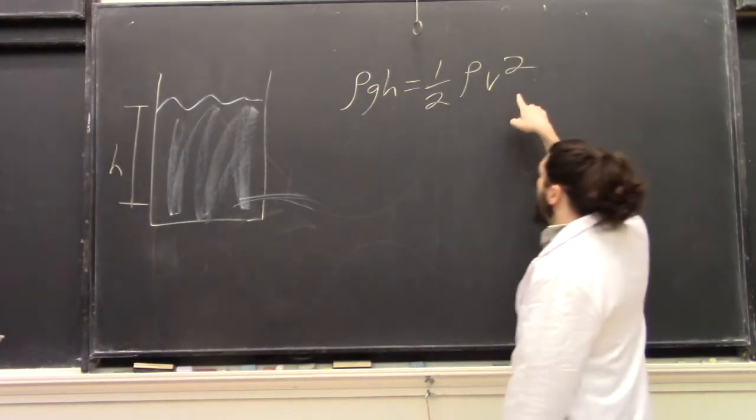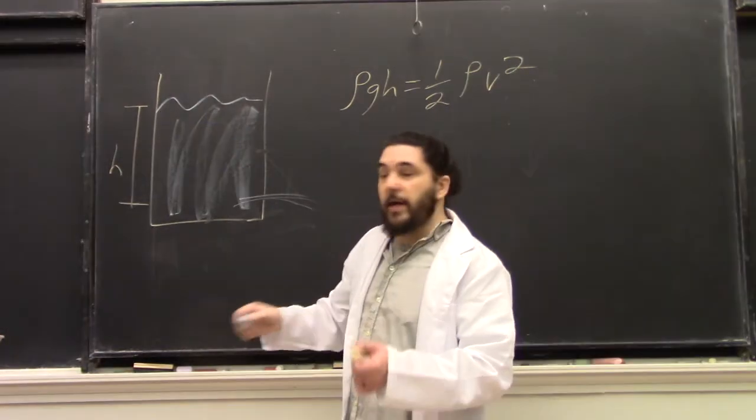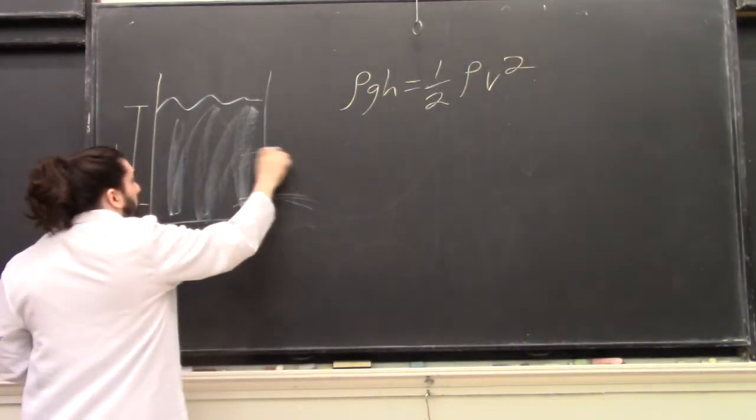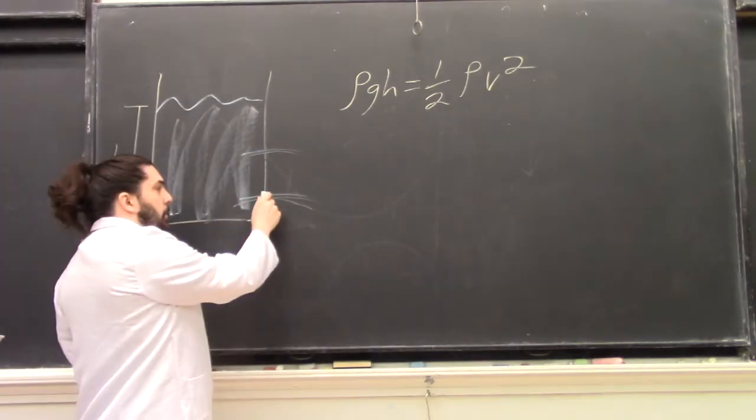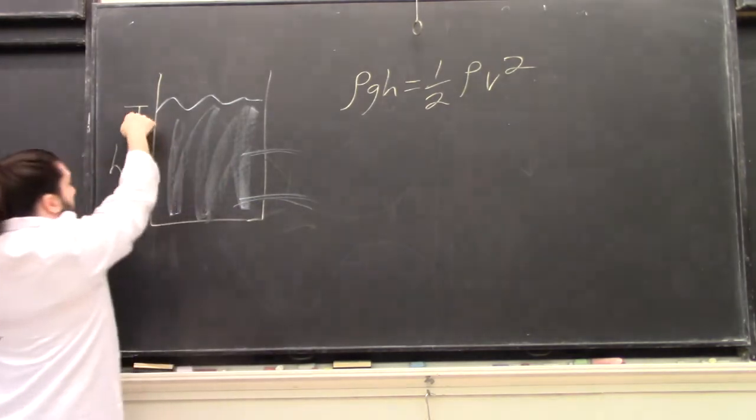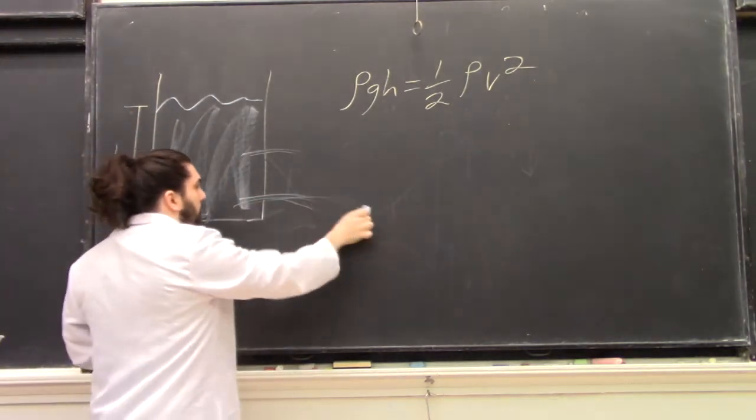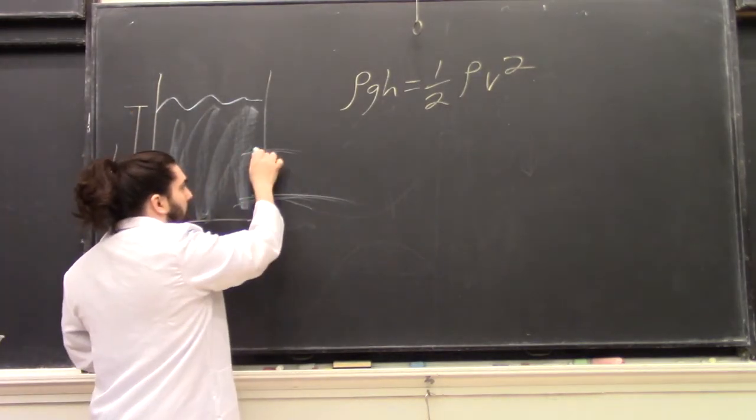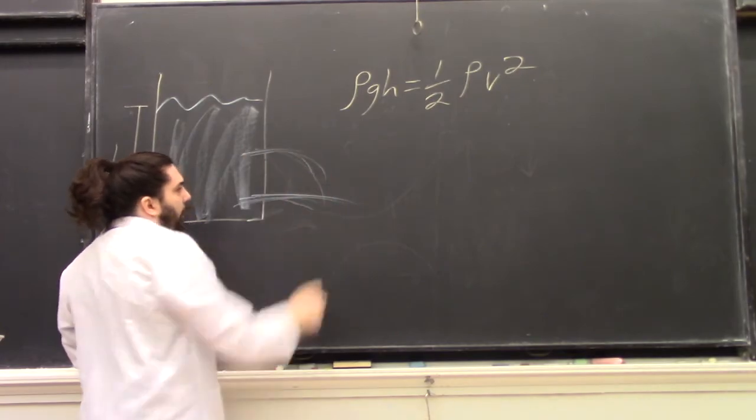So the greater the height, the greater the speed. We can actually see this if we punch a second hole in. The water on the bottom, being at a greater height differential, should go faster than the water with the higher hole.